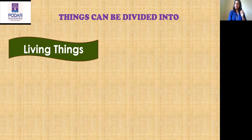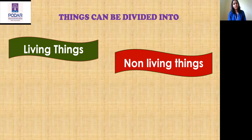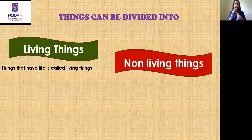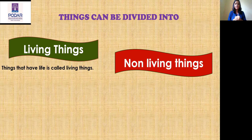Things can be divided into living things and non-living things. Things that have life are called living things. We have a life — we are breathing, we are growing, we are eating food, we are drinking water. To survive, we have to do all these things, and one day we are going to die also. We are producing new young ones. So these all are the characteristics of living things.